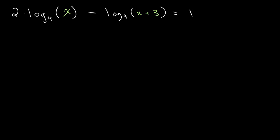So in order for us to apply the law of division, we have to remove this 2. And we'll do that by using the power law. So the power law, if you remember, is simply bringing the coefficient and making it the power. So we get log base 4 of x squared. And then minus log base 4 of x plus 3. And this is equal to 1.